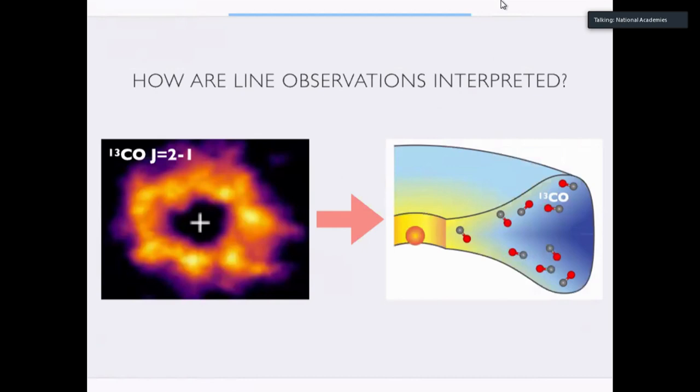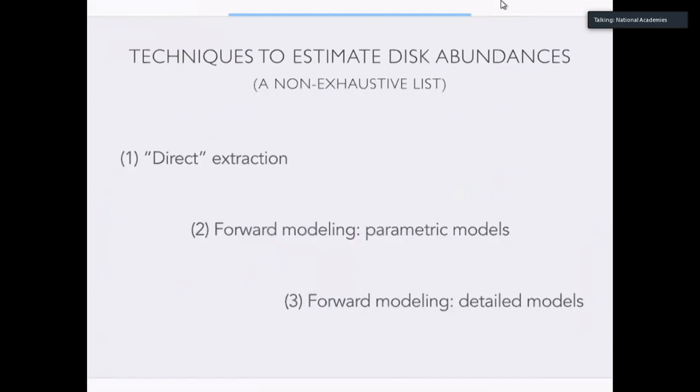So how do we actually go from an image to an actual distribution of molecules in the sky? There are a few different ways we can actually go about doing this. I'll just cover very briefly the three main ways in the literature. The first is direct extraction from the data. The second is a forward modeling approach using parametric models. And the third is forward modeling using detailed models.